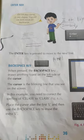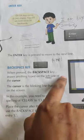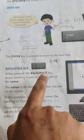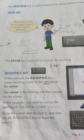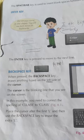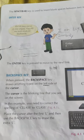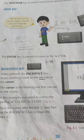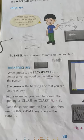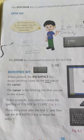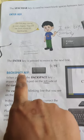Then next is the backspace key. When you press the backspace key, it erases anything typed on the left side of the cursor. So backspace is used to erase — if we accidentally typed something wrong, just like using an eraser in a notebook, on the computer we use the backspace key.